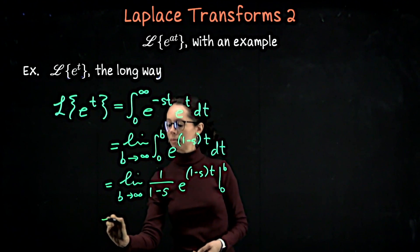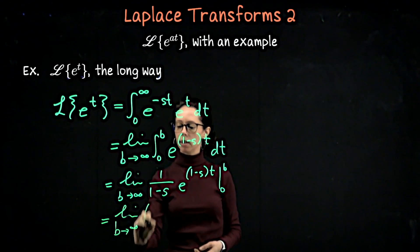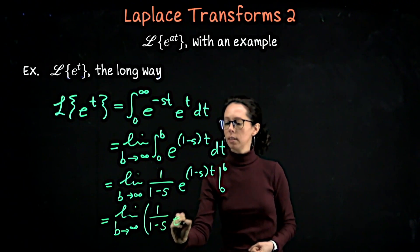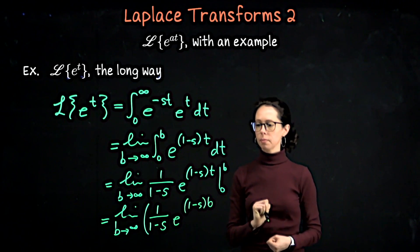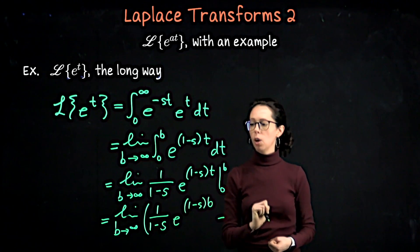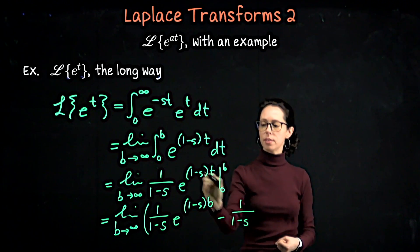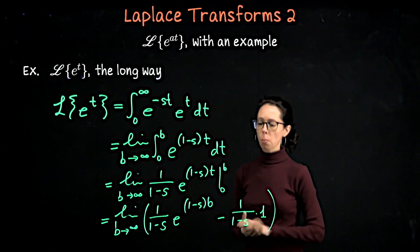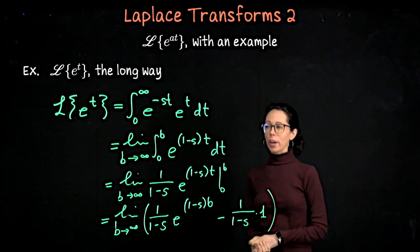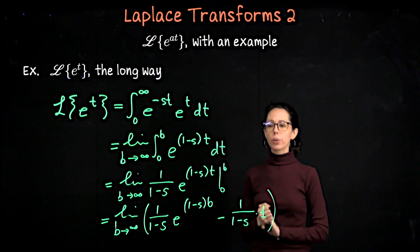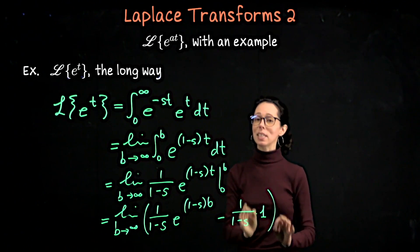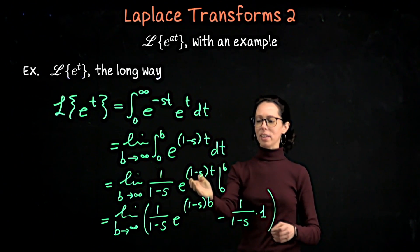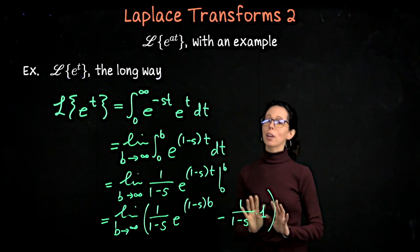Let's plug in b and 0. We get the limit as b goes to infinity of 1 over 1 minus s times e to the 1 minus s times b, minus 1 over 1 minus s times e to the 0, which is 1. Note that we are transforming a function of t into a function of s. When plugging in bounds, you plug them into t — that's why b appears in the exponent, and e to the 1 minus s times 0 gives us the 1 here. Be careful not to plug into s.